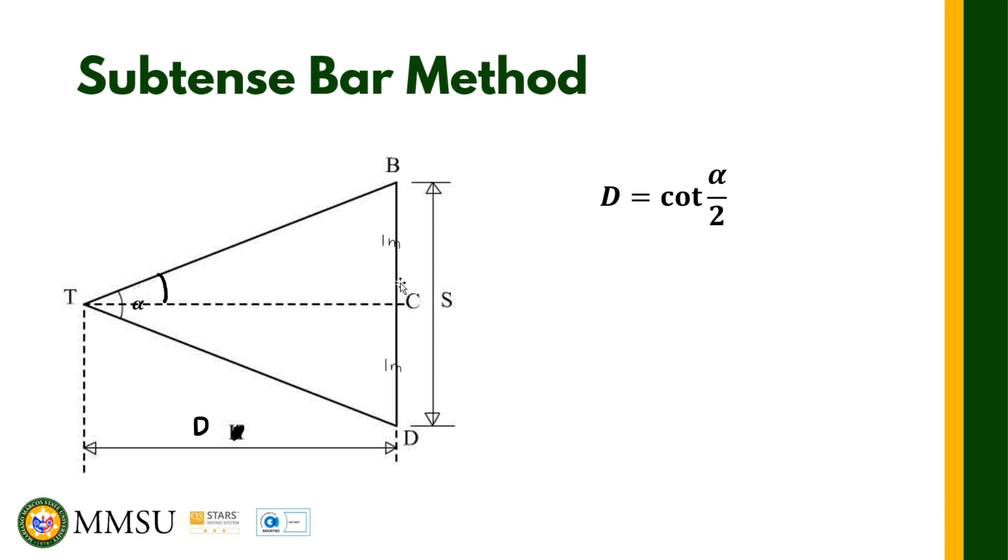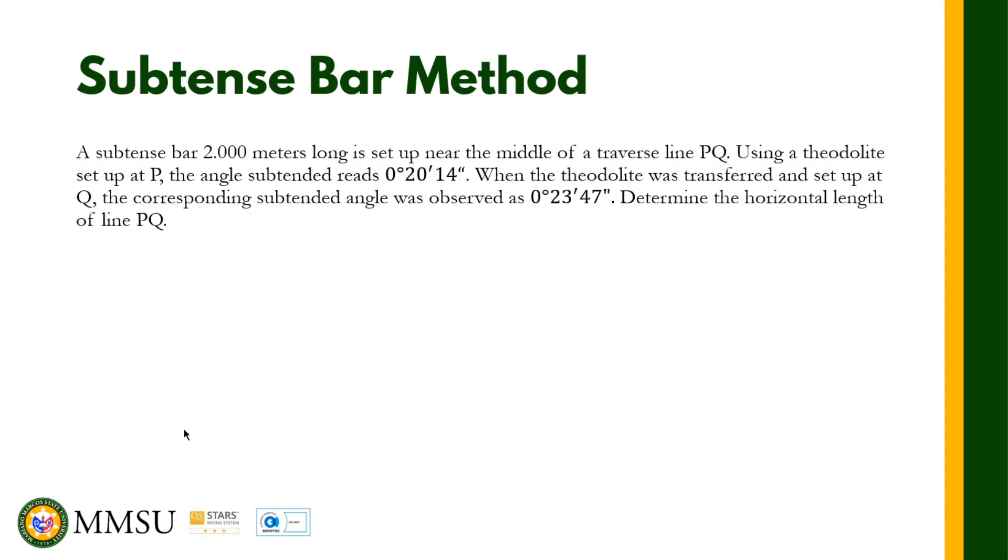We shall illustrate this by answering this problem. A subtense bar two meters long is set up near the middle of a traverse line PQ. Using a theodolite set up at P, the angle subtended reads 0 degrees 20 minutes 14 seconds. When the theodolite was transferred and set up at Q, the corresponding subtended angle was observed as 0 degrees 23 minutes 47 seconds. Determine the horizontal length of line PQ.